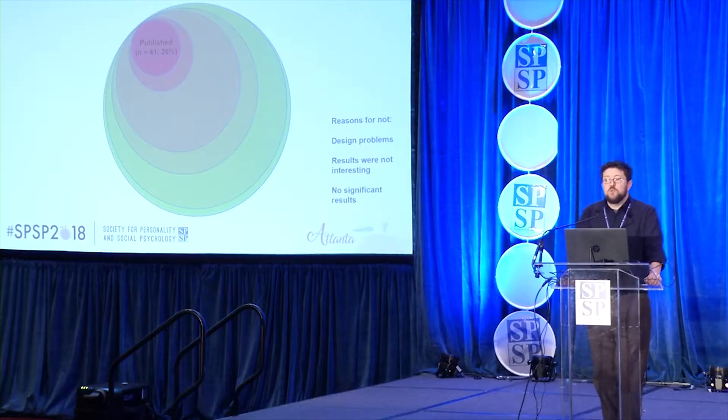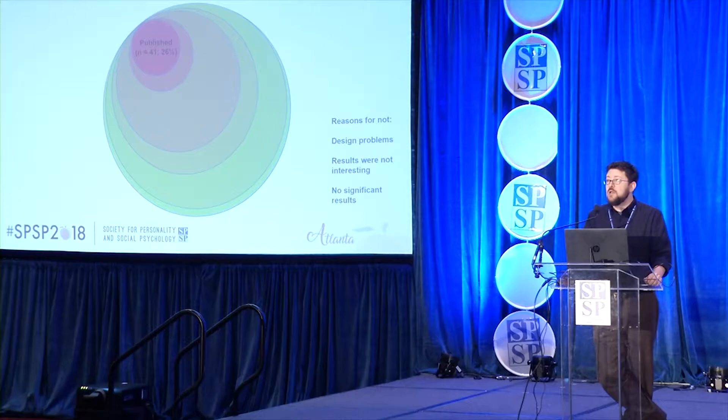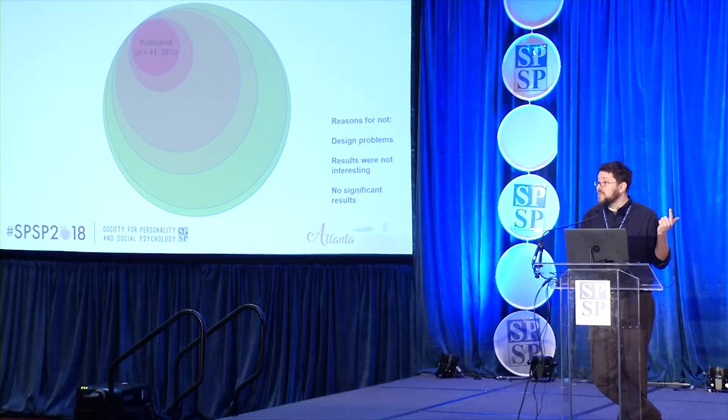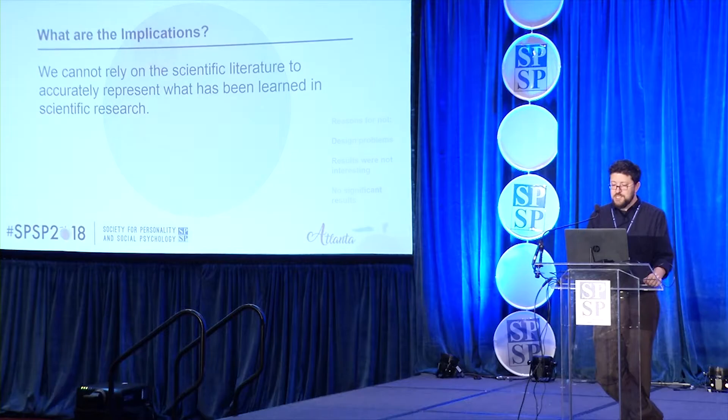To summarize: of the 155 studies for which subjects were tested, findings from only 26% appeared in print where others could consume them and learn from them. Many studies that ultimately did not get published were not excluded because of design problems per se, but because of problems with the results themselves—not being interesting, not being statistically significant, or not being earth-shattering in their theoretical implications.